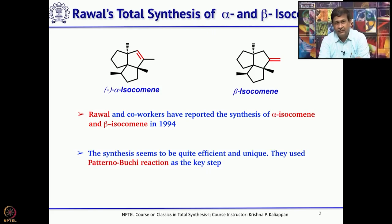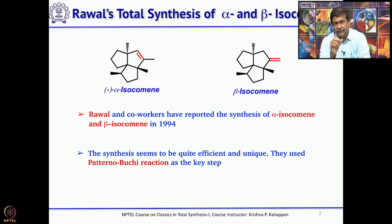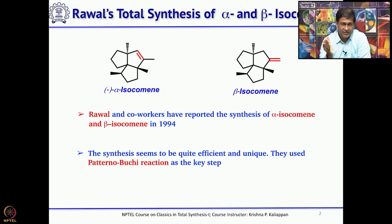Rawal's total synthesis involved three or four key reactions: first, an intramolecular Paternò-Büchi reaction — as you know, the Paternò-Büchi reaction gives an oxetane, a four-membered ring — to get the oxetane as the key step. Second, opening of the oxetane to get a homoallylic alcohol. Third, a highly regioselective opening of the oxetane followed by a simple fragmentation reaction which converts the bridged system into a fused system.